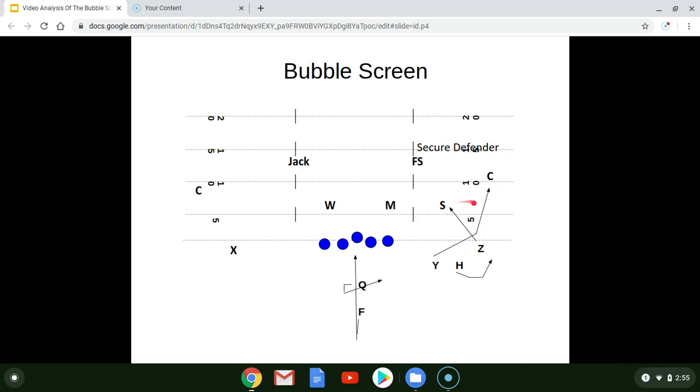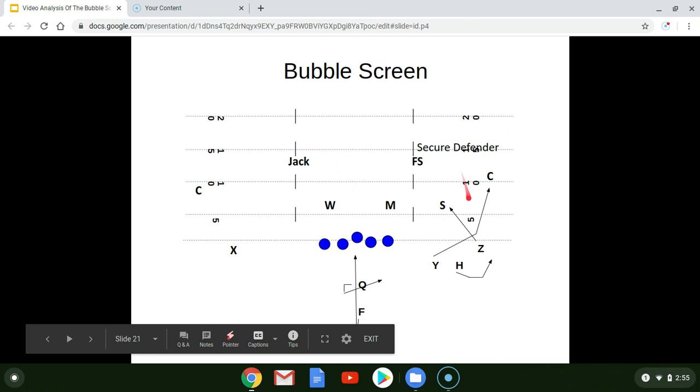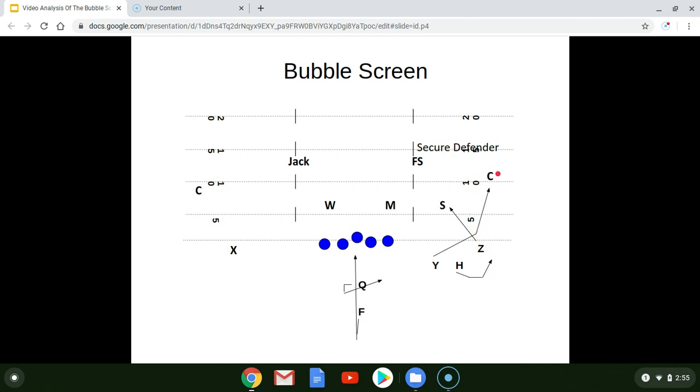if the Sam doesn't get outside of the down block by Z, then the H will catch the screen. And he has a nice crease to run the ball in right up the numbers. If the corner sticks his head inside of Y's kickout block, then the H catches the ball and he's down the sideline.